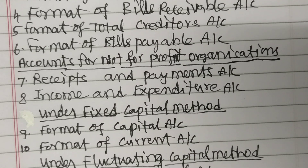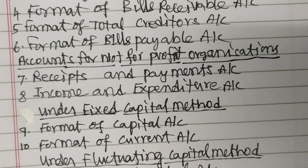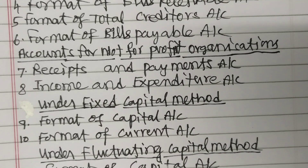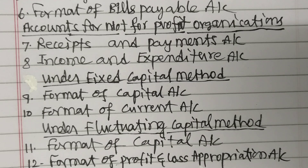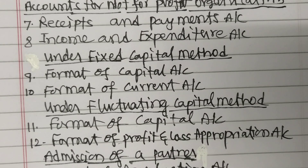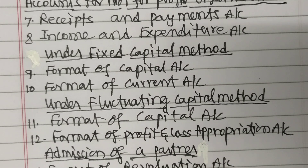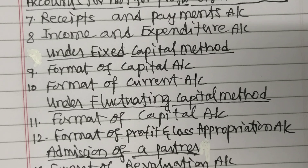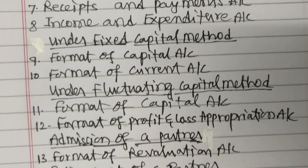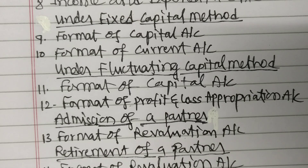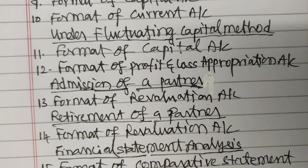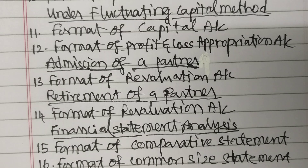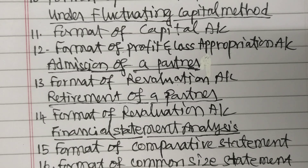For Partnership Accounts under the Fixed Capital Method: Format of Capital Accounts, Format of Current Accounts. Under the Fluctuating Capital Method: Format of Capital Accounts, Format of Profit and Loss Appropriation Account. For Admission of a Partner and Retirement of a Partner: Format of Revaluation Accounts.